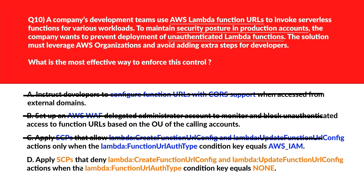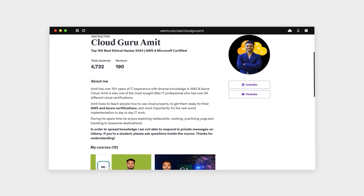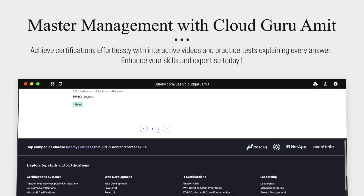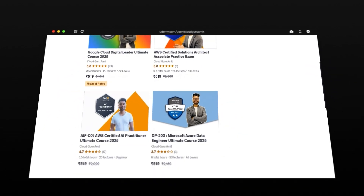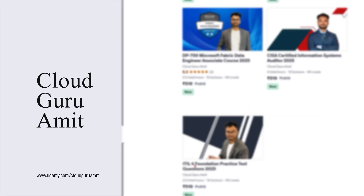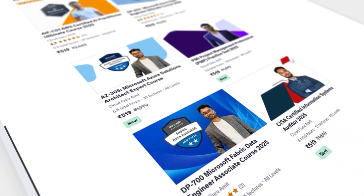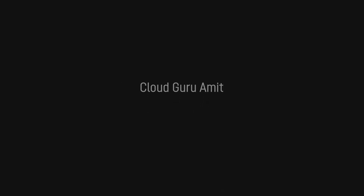Option D says: apply SCPs that deny Lambda CreateFunctionUrlConfig and Lambda UpdateFunctionUrlConfig actions when the Lambda function URL auth type condition key equals NONE. Denying configuration actions where the authentication type is NONE blocks unauthenticated Lambda function URLs from being set up in production. Option D is the right answer. Thank you so much for watching this video.